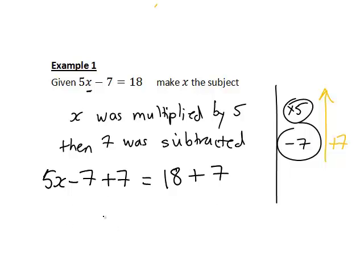And you can see this is indeed effective because on the left negative 7 plus 7 just gives 0 and 5x plus 0 is just 5x.